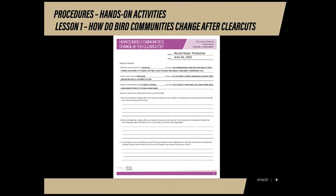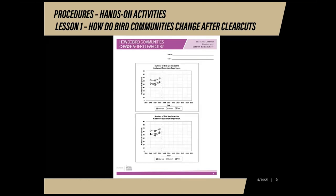On the activity sheet, instead of using a graph, students will write their predictions and reasoning in the initial predictions section. Afterward, you will show them what a clear cut forest looks like. Students will use the sheet to answer synthesis questions as you show them the real data from the hardwood ecosystem experiment. As the years of data progress, students will have a chance to come back and answer synthesis questions. Remind them it is okay if their initial predictions differ from what the scientists found. Reveal the data year by year and allow students to revise their predictions after every year or two, then have them answer synthesis questions one through three once they have seen all of the data.